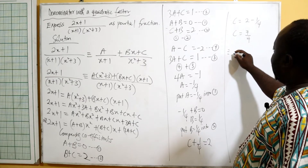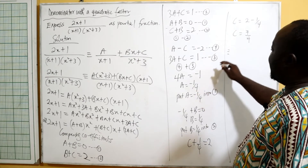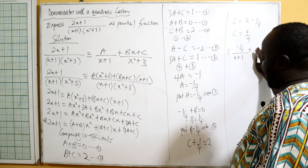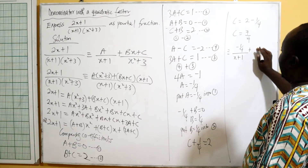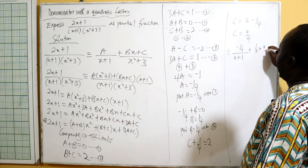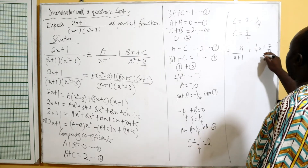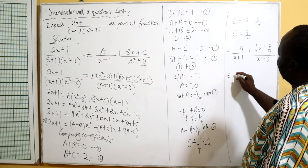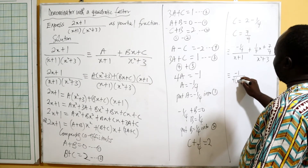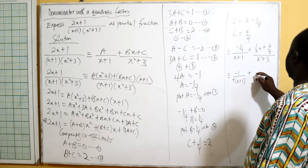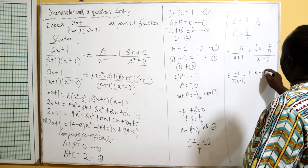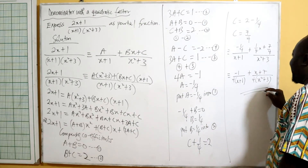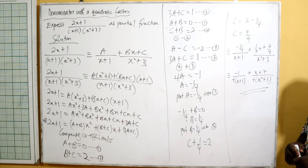Writing the partial fraction: a is negative one over four, so we have negative one over four divided by x plus one, plus — since b is one over four and c is seven over four — we get one over four times x plus seven over four, all over x squared plus three. This simplifies to negative one over four times x plus one, plus x plus seven over four times x squared plus three. This is how we express the given fraction as partial fractions.